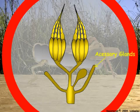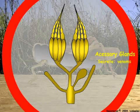Accessory gland secretions assist egg-laying. These products may be venoms, as in the case of wasps, or cement to fix the egg to the oviposition site.